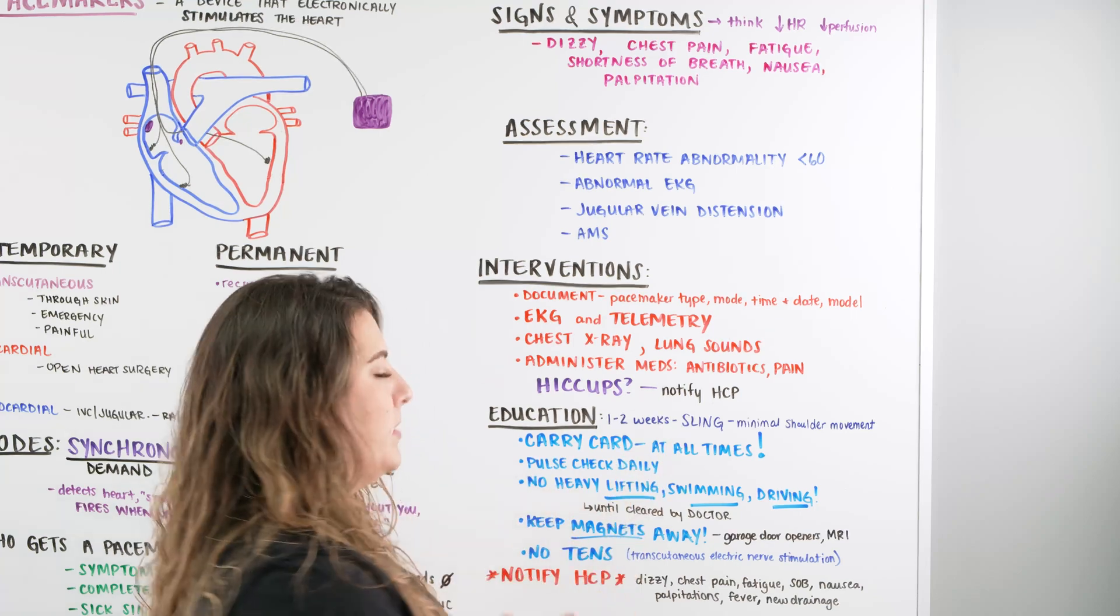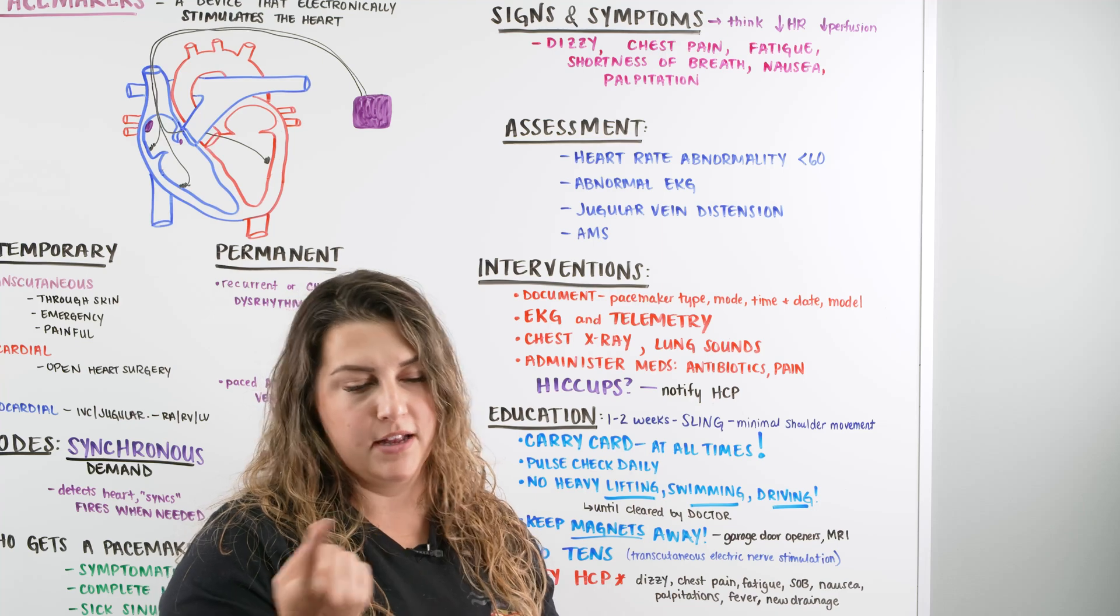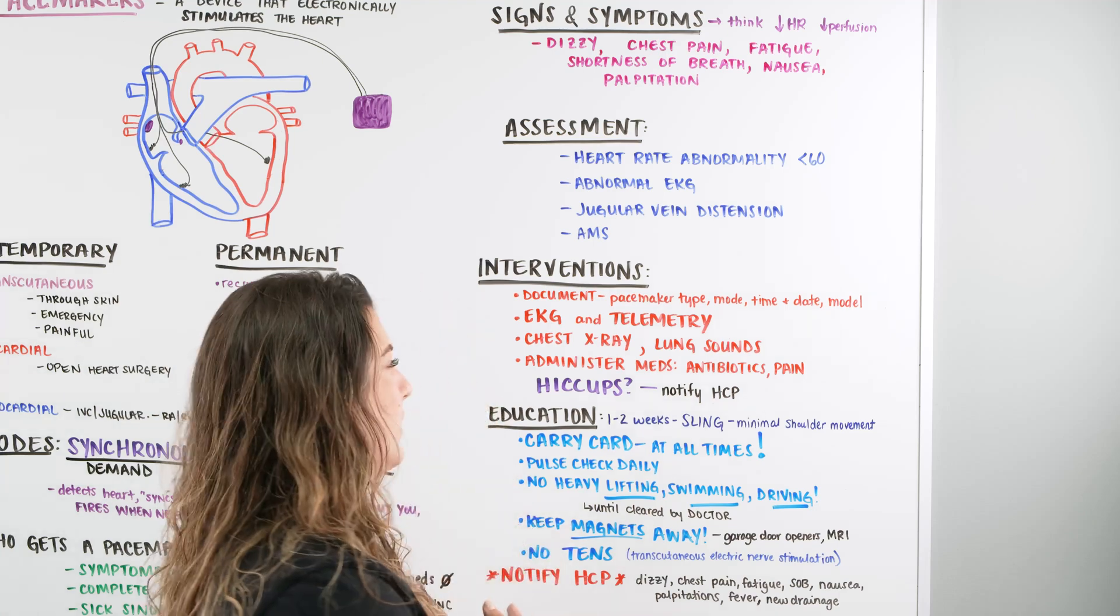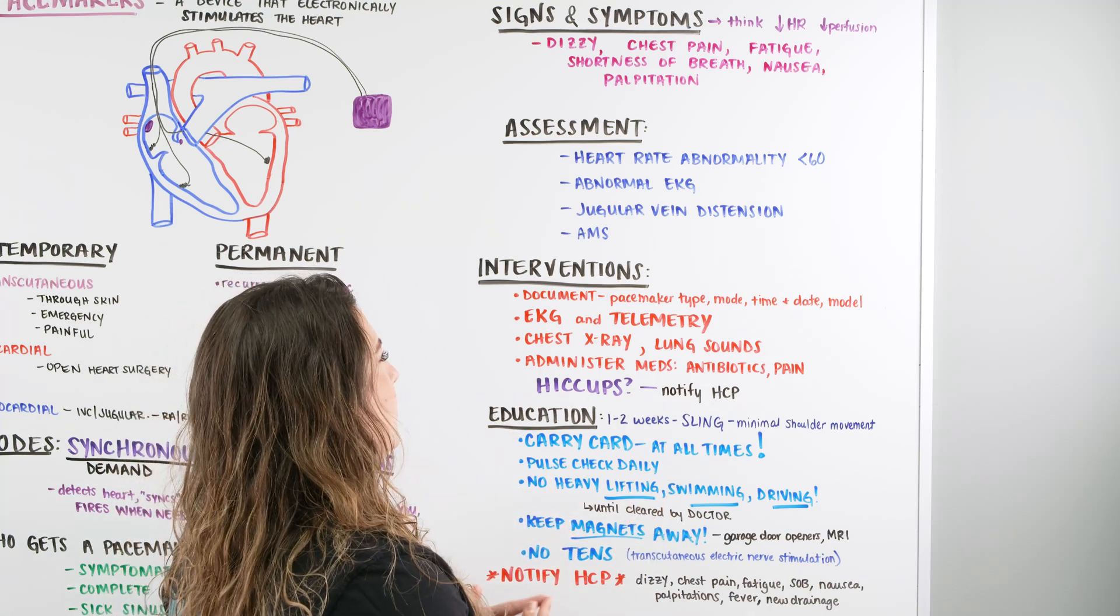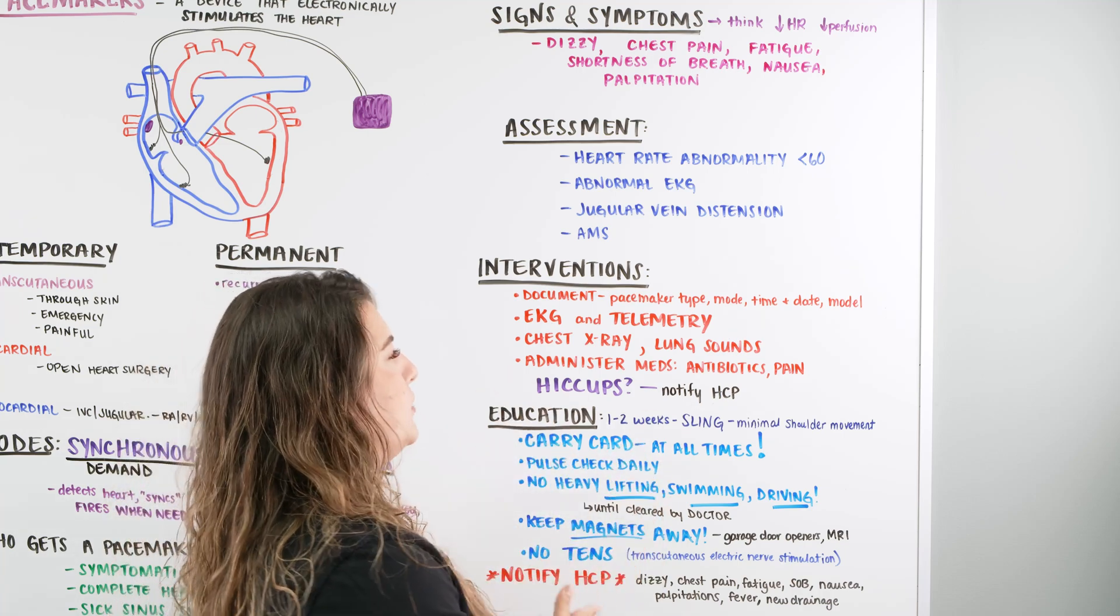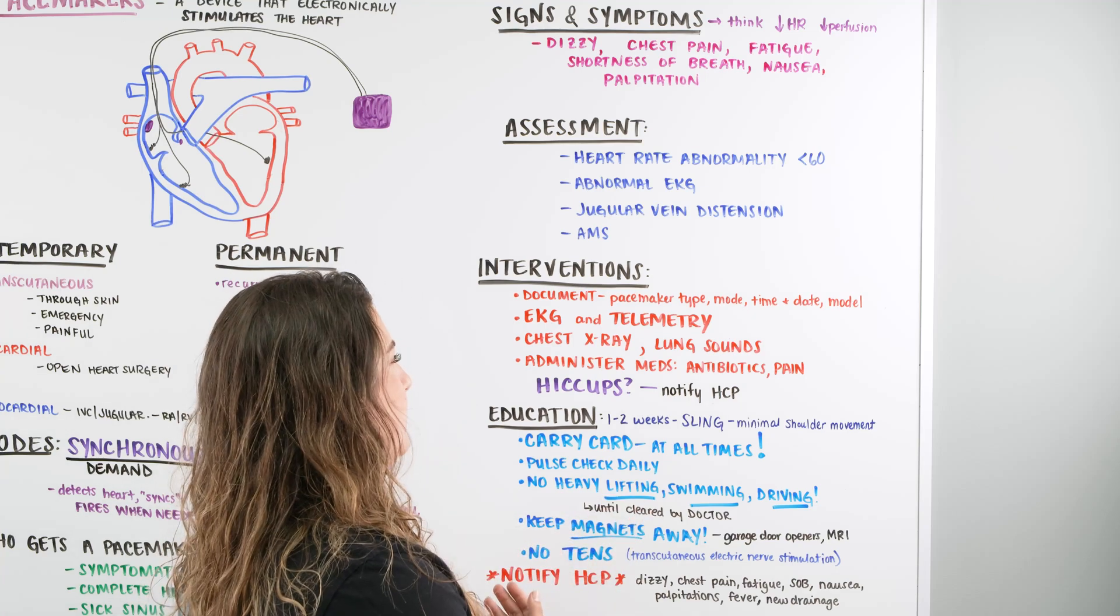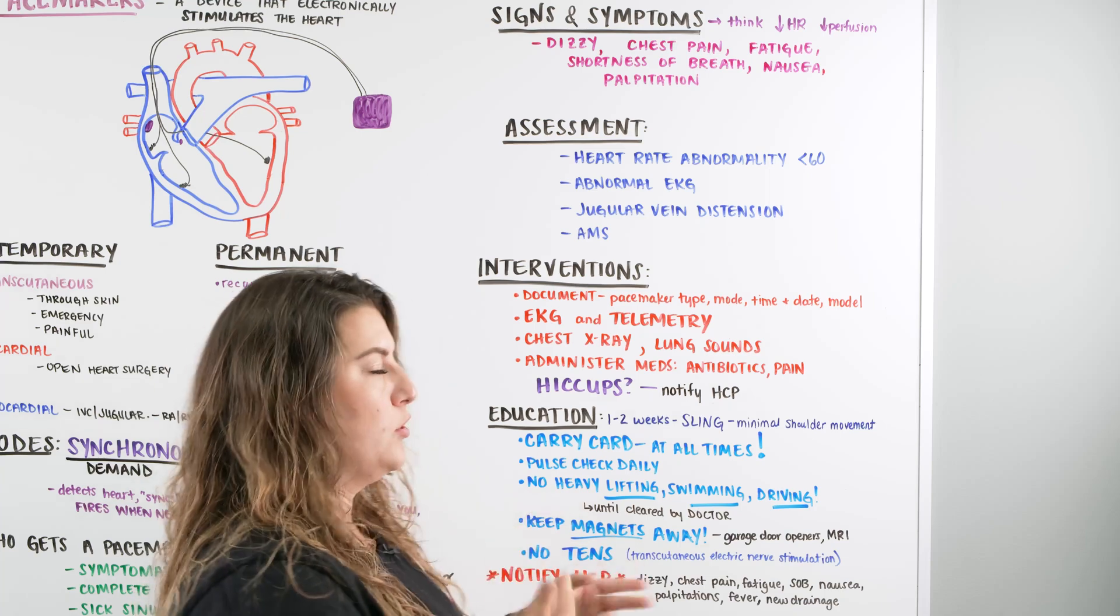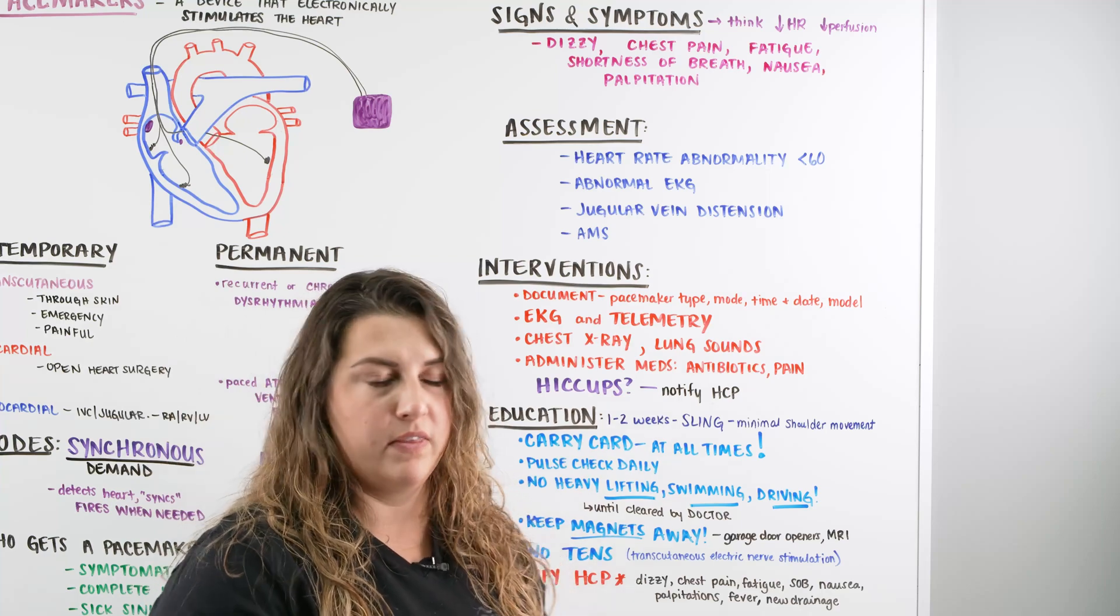Eventually at some point, we might say, this patient may need a temporary pacemaker and some medication, or might need some surgery to get a pacemaker implanted. When the day comes when they do need their pacemaker implanted, we're going to be looking at what's going on with our patients. The interventions are when the patient does get the pacemaker in, we want to make sure that we have documentation of the type, the mode, the time and date, and the model of that pacemaker. We want to make sure we know what's going on in the body, and it's a lot easier to know that when we put it in the day of.